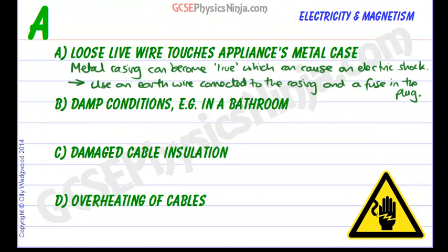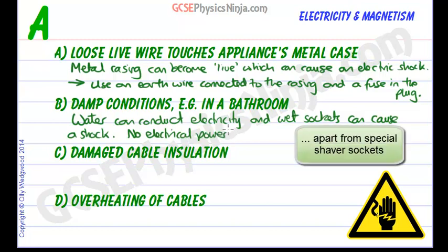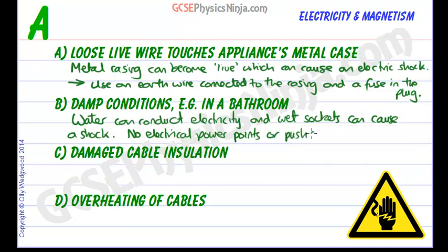So let's just pop that in there. Damp conditions, e.g. in the bathroom. Water can conduct electricity and wet sockets can cause a shock. So that's why by law there are no electrical power points or push switches for lights in bathrooms.